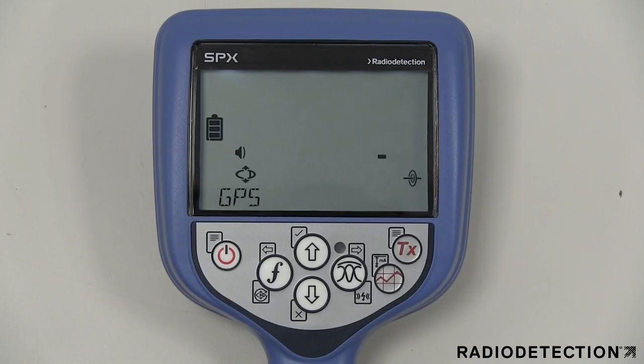The GPS menu is only found on GPS locator models and allows you to enable and disable the internal GPS module.